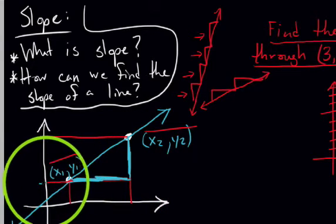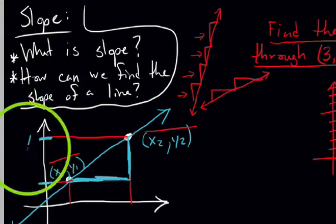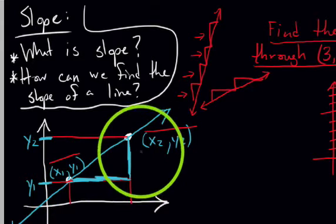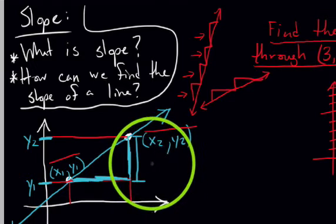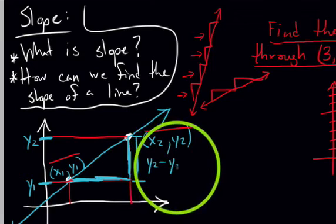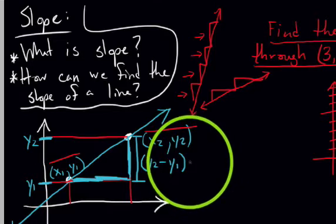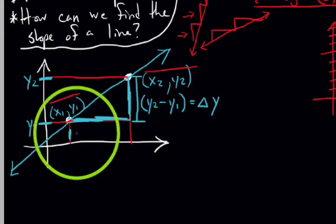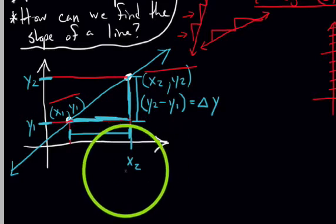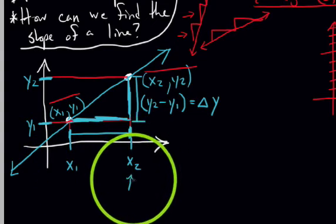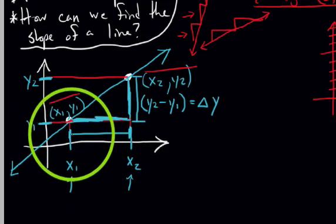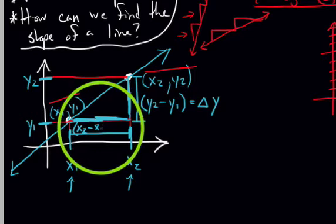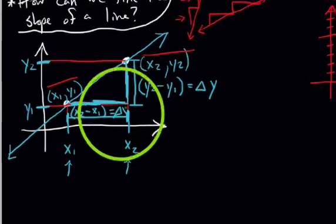Starting with rise: the top y value is the y value of the second point, and the bottom y value is the y value of the first point. The distance is defined as the difference between the y values — y2 minus y1 — which we also call delta y. The horizontal distance is the difference in the two x values, x2 minus x1, which we call delta x.